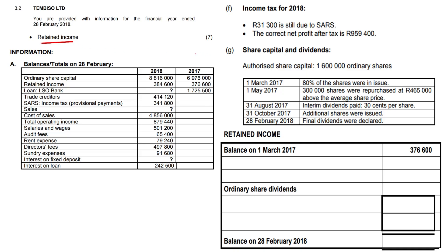Let us take a good look at our retained income notes, everybody. We are provided with the information for the year ended 28 Feb 2018. We are dealing with Tim B Saw Limited and we need to complete our retained income note for a grand total of seven marks.